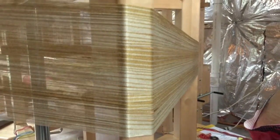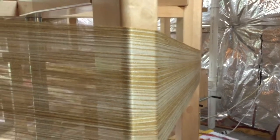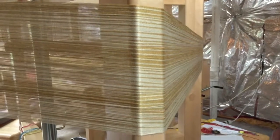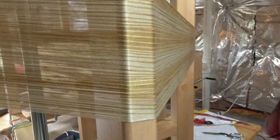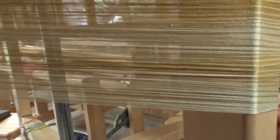So this is a shawl kit, which is 10-2 cotton, and it has Janet's fantastic pattern that she designed that has stripes in the warp, as you can see.